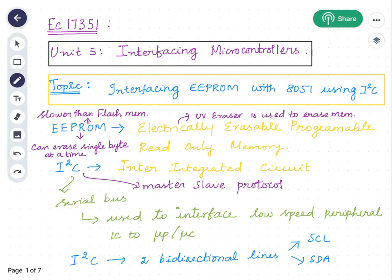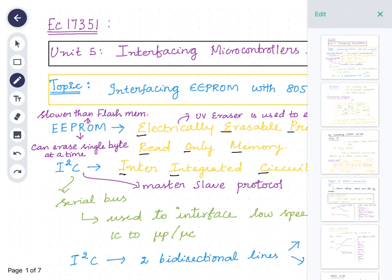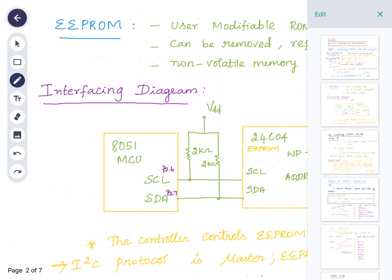I2C is nothing but IIC — Inter-Integrated Circuit. EEPROM stands for Electrically Erasable Programmable Read-Only Memory. It is a non-volatile memory and it is not as fast as flash memory. Only one byte can be erased at a time. I2C is a serial bus used to synchronize slow peripheral devices with a fast controller or microprocessor. I2C consists of two wires: one is the SCL line and another is the SDA line. SCL is the Serial Clock Line and SDA is the Serial Data or Address line.